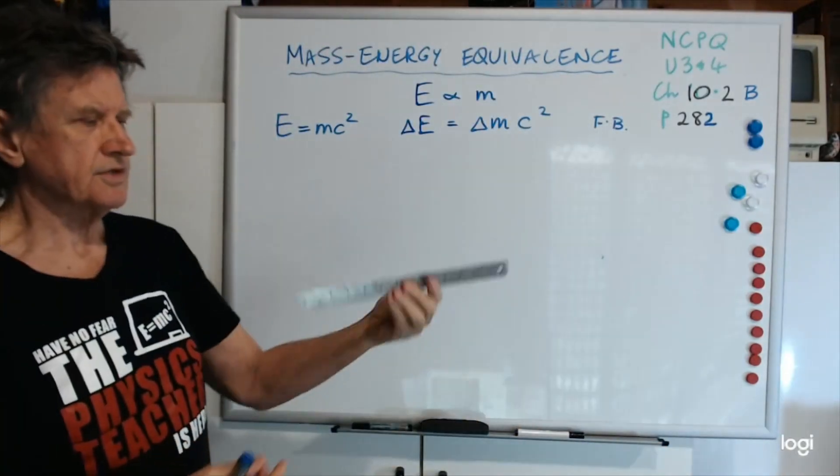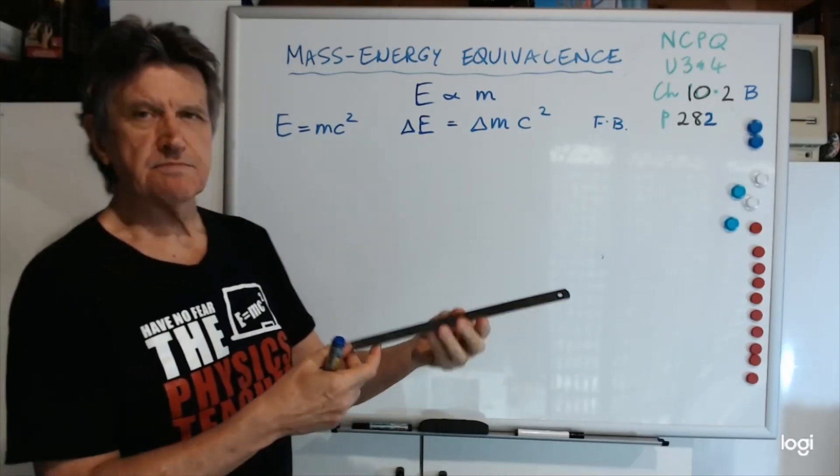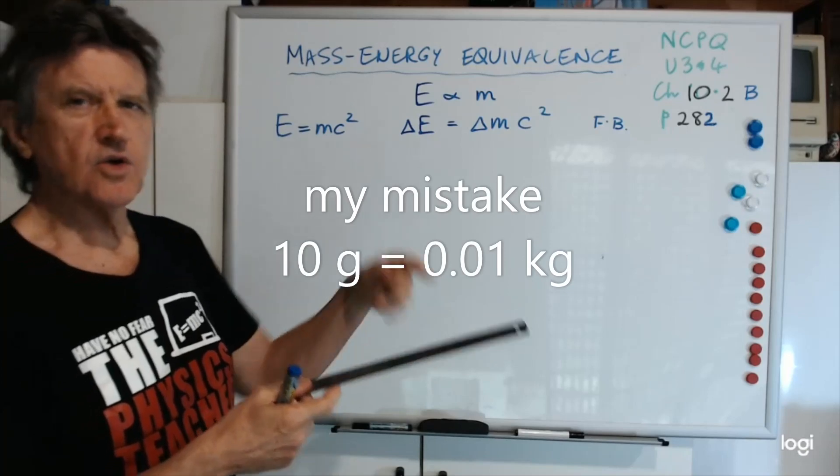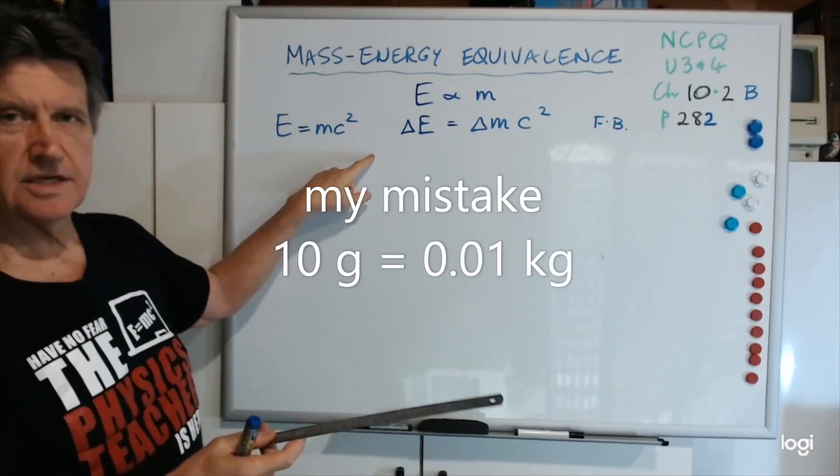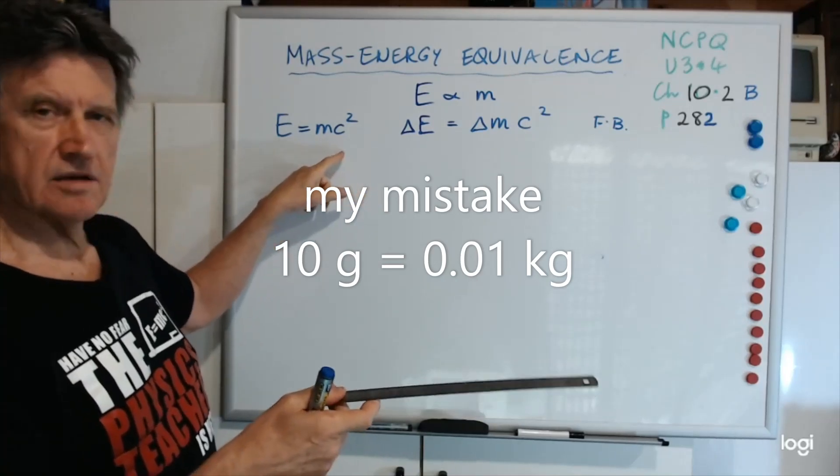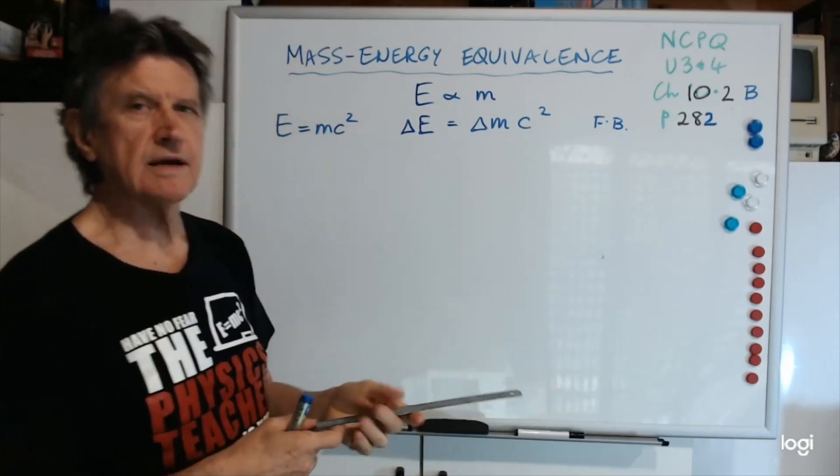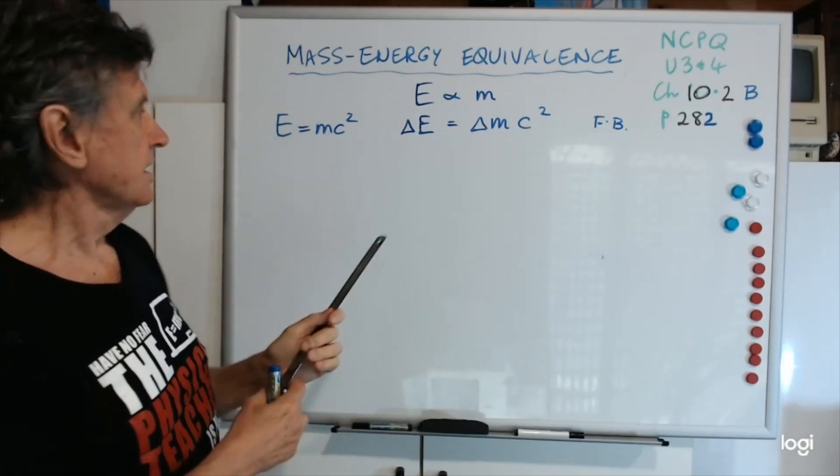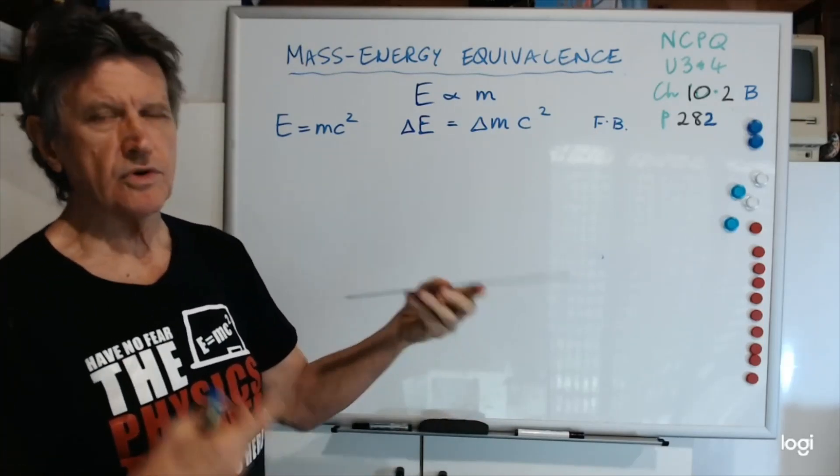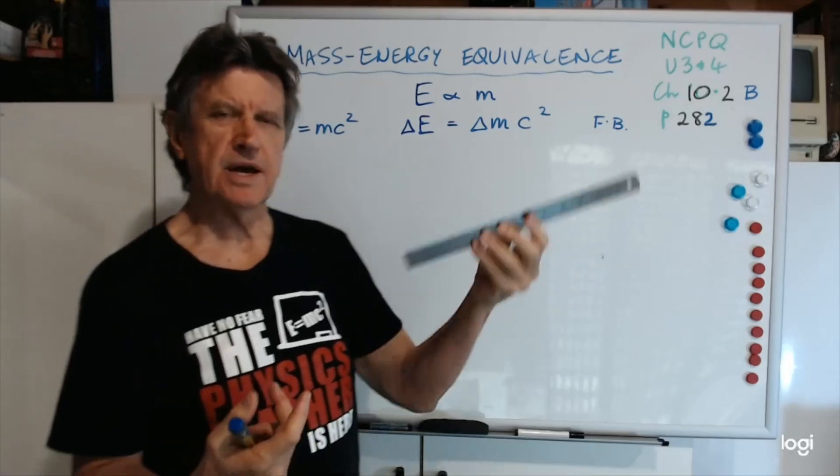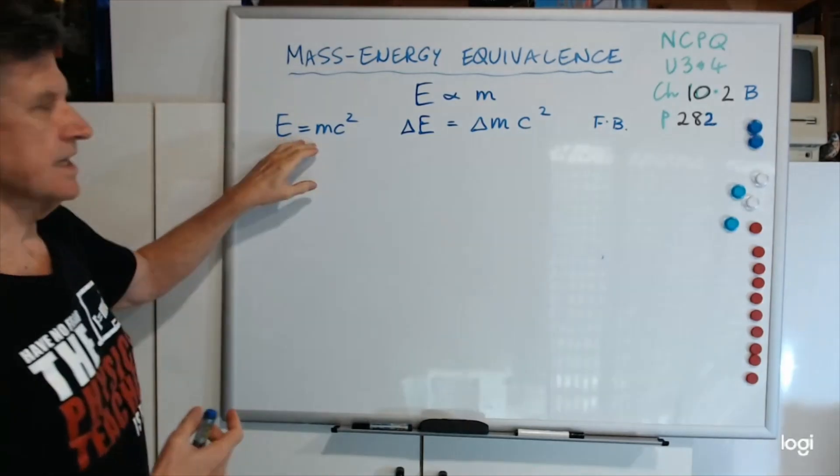If I took a ruler for instance, this is just a steel ruler, it's about 10 grams, that's 0.1 of a kilogram. According to that theory, you could just multiply 0.1 of a kilogram times c squared, and you'd get about 10 to the 16 joules of energy. Now obviously you can't get that. That's billions of joules of energy out of a ruler. That would be enough to power Australia for a week. So you can't do it. So the formula is a bit misleading in this form.